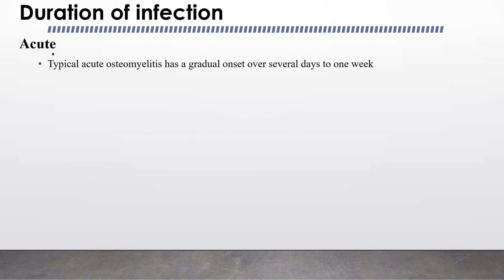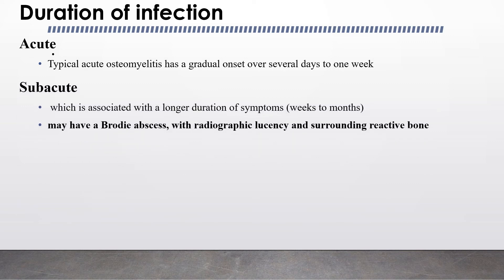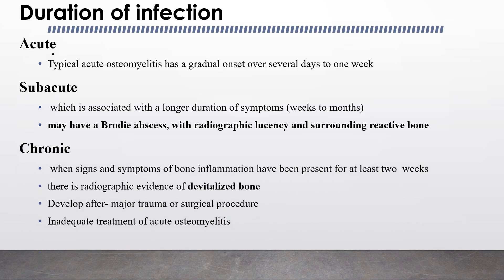Regarding the duration of infection: acute osteomyelitis has a gradual onset over several days to one week. Sub-acute osteomyelitis is associated with a longer duration of symptoms — weeks to months — and may show a Brodie's abscess with radiographic lucency and surrounding reactive bone. In chronic cases, symptoms of bone inflammation have been persistent for at least two weeks, there is radiographic evidence of devitalized bone, and it develops after major trauma, surgical procedure, or inadequate treatment of acute osteomyelitis.